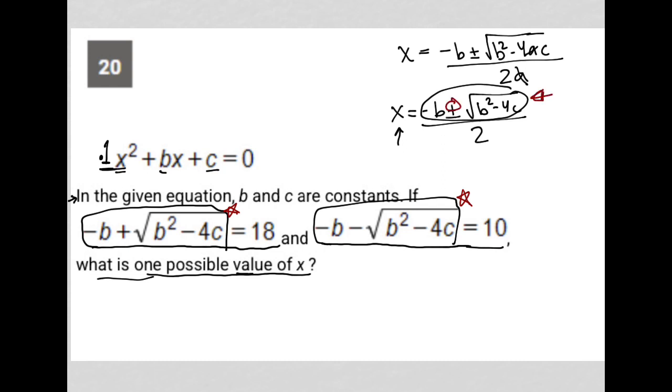It tells us the positive version is 18 - that's -b + √(b² - 4c). And it tells us the negative version, -b - √(b² - 4c), equals 10.